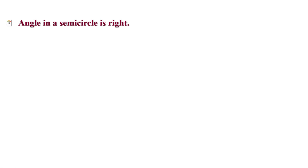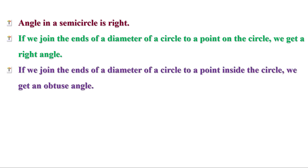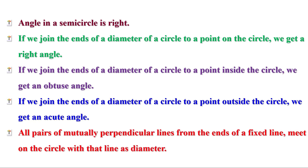Angle in a semicircle is right. If we join the ends of a diameter of a circle to a point on the circle, we get a right angle. If we join the ends of a diameter to a point inside the circle, we get an obtuse angle. If we join the ends of a diameter to a point outside the circle, we get an acute angle. All pairs of mutually perpendicular lines from the ends of a fixed line meet on the circle with that line as diameter.